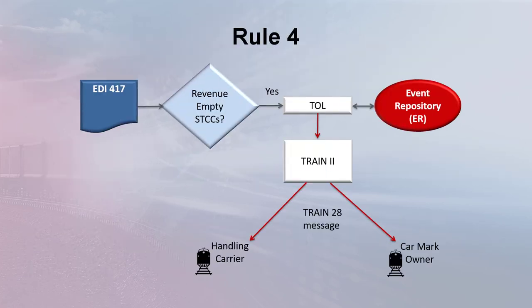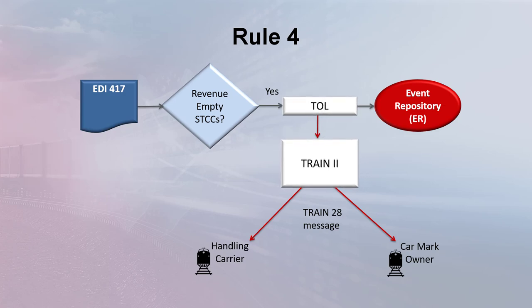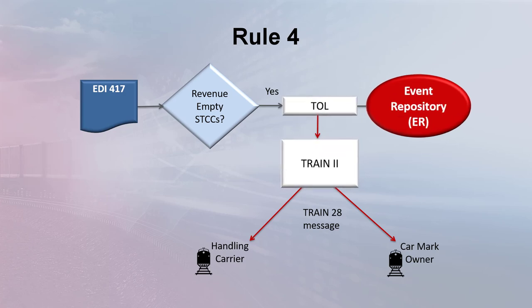Carriers do not need to take any special action to get CarHire relief under Rule 4. Railink reviews all EDI 417 waybills for revenue empty sticks as defined in CarHire Rule 4. When revenue empty sticks are identified, a TOL Train 28 message is created and sent to the CarMark owner and the handling carrier. The transaction is also posted to the Event Repository.